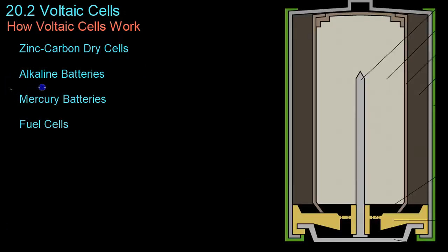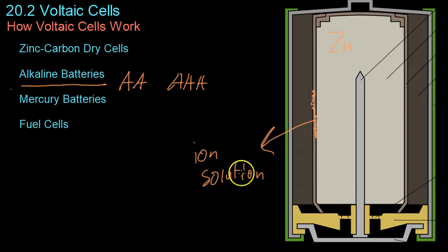Moving on to alkaline batteries, these are typically the AA and AAA batteries you use in small toys. In this case, you have a zinc anode right in here. Then this tiny layer right outside the zinc anode is basically the salt bridge, the ion solution separating it from a cathode out here.